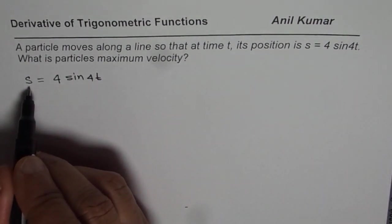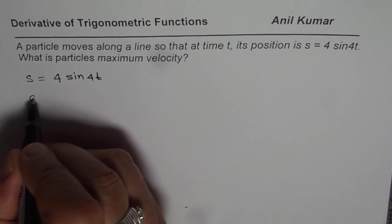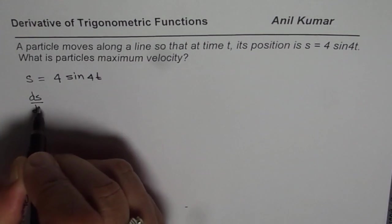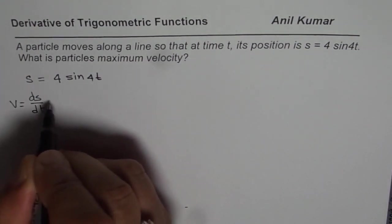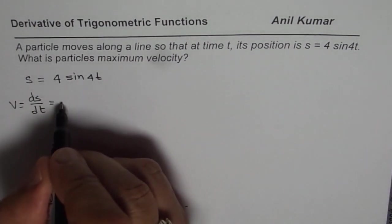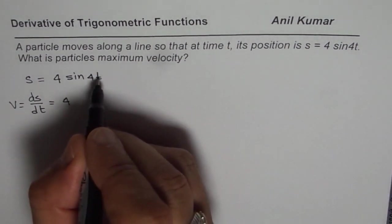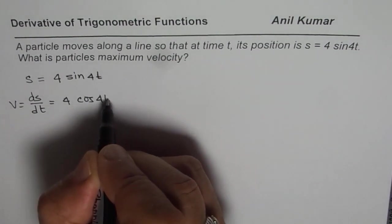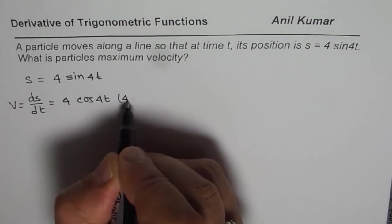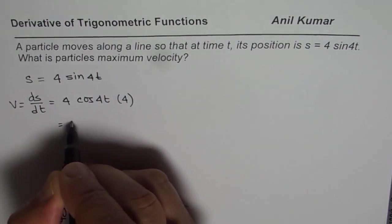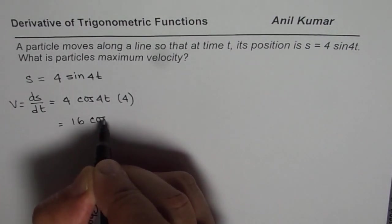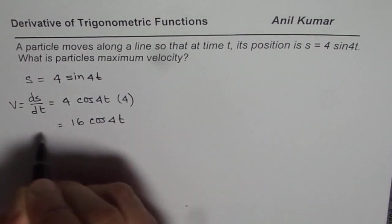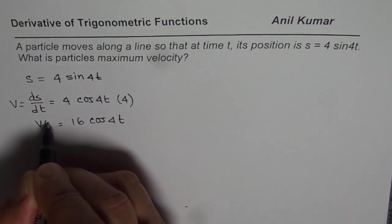Now velocity is derivative of displacement. So velocity is ds/dt. If I find derivative of this, I get 4 times the derivative of sin 4t which is cos 4t, times 4. So that gives us 16 cos 4t. So that is the velocity as a function of time.